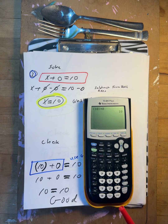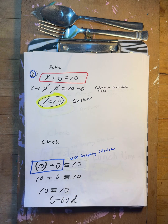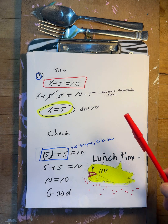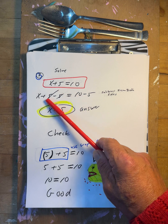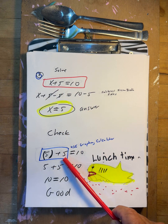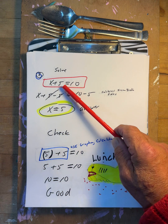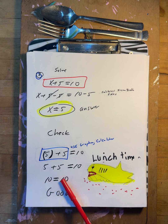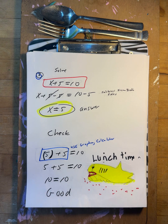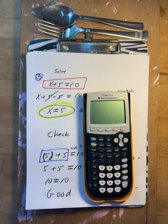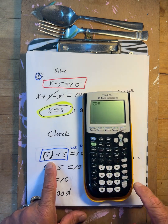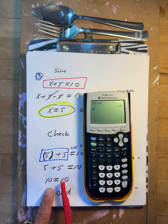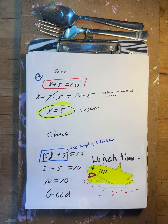Next question: x plus five equals ten. Minus five, minus five on both sides, so x equals five. Does that work? Five plus five — take the parentheses off — five plus five is ten. Ten equals ten, yes. On the calculator: parentheses, five plus five — that gives you ten. Equation is correct.